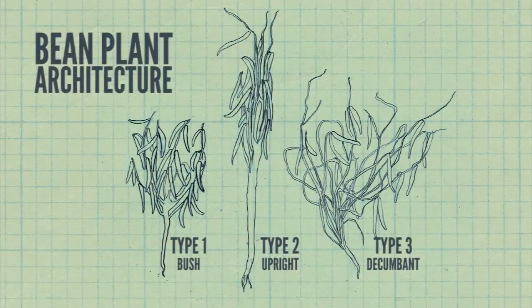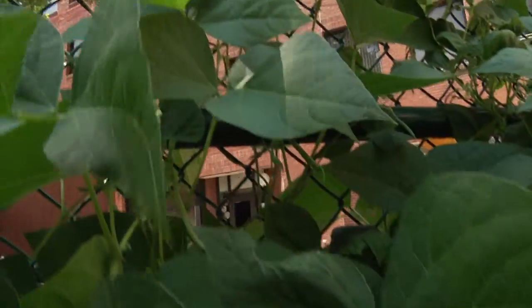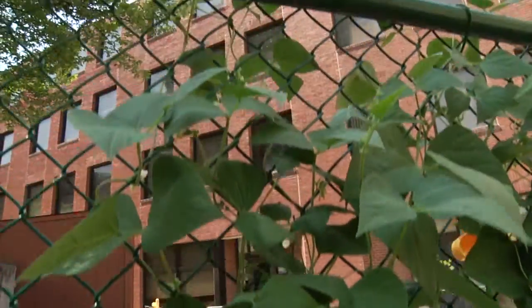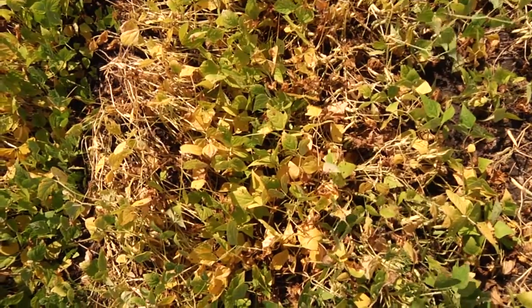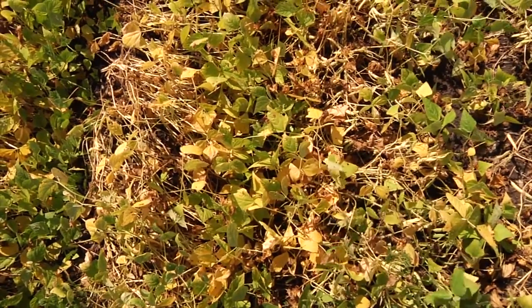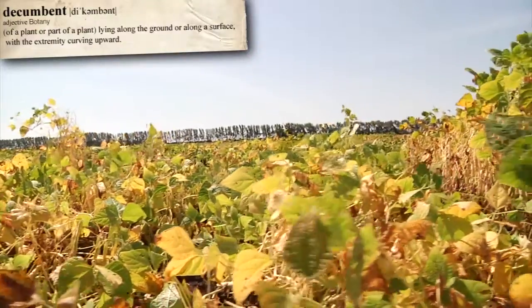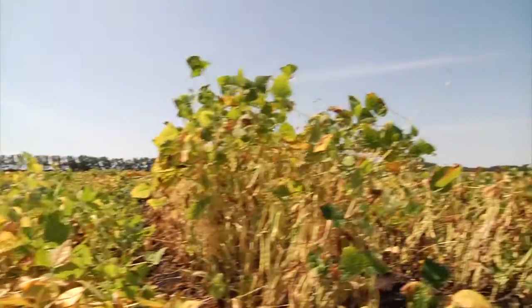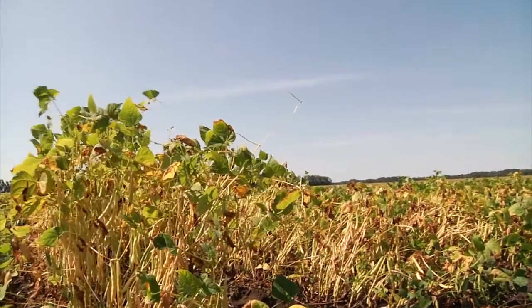Tell us what you know about the architecture of bean plants. In beans, there's a range of plant architectural types that range all the way from decumbent types, much like cucumber vines — decumbent meaning the vines would grow along the ground with only the extreme tips pointing upwards — all the way to more upright types that are similar to soybeans in terms of their plant architecture.